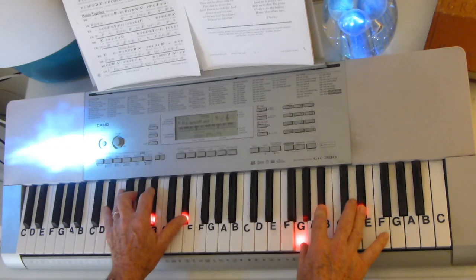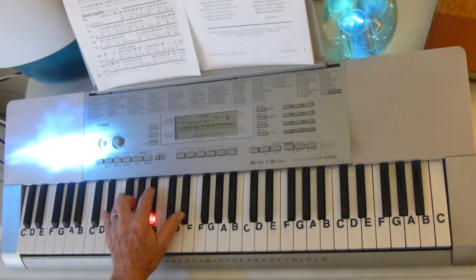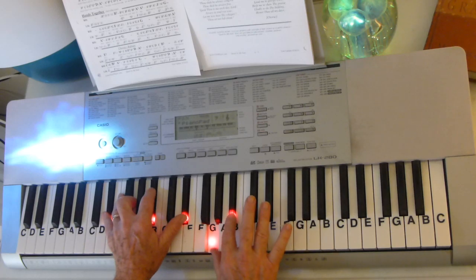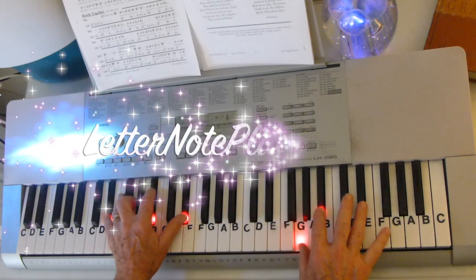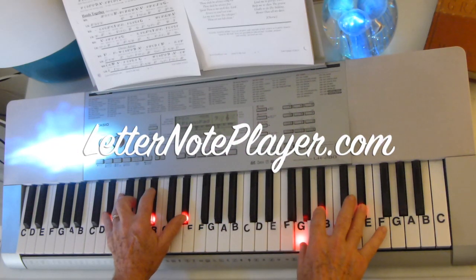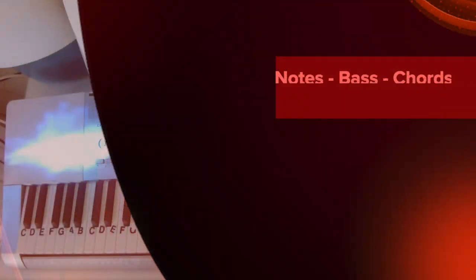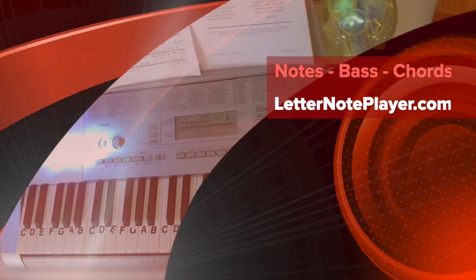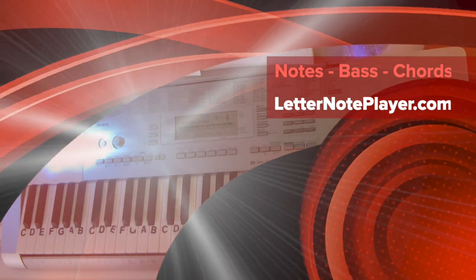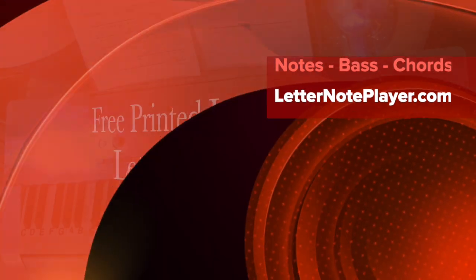Then all you've got to do is arpeggiate the E-flat chord. E-flat, G, B-flat, E-flat, G, B-flat, E-flat. There you have it. Speak to my soul. Nineteenth century hymn. A beautiful gospel hymn that's a classic. Hope you enjoy playing it.